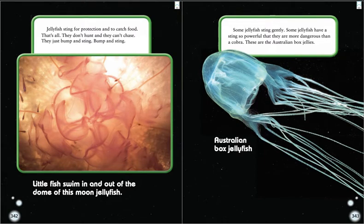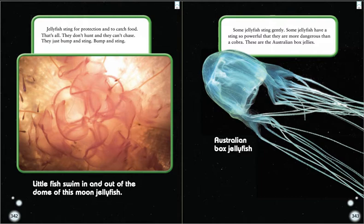Jellyfish sting for protection and to catch food — that's all. They don't hunt and they can't chase. They just bump and sting, bump and sting. This is a picture of little fish swimming in and out of the dome of a moon jellyfish. Some jellyfish sting gently. Some jellyfish have a sting so powerful that they are more dangerous than a cobra — that's a type of snake. These are the Australian box jellies. This is an example of one; it has a sting so powerful that it's worse than a snake's poison.